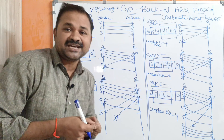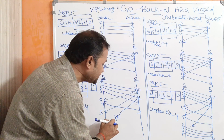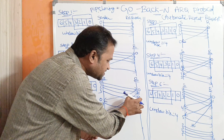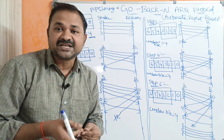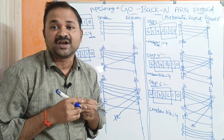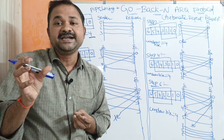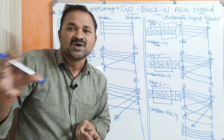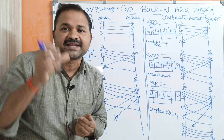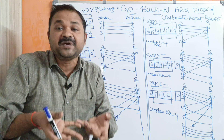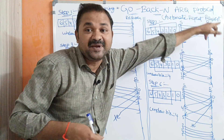Now in step five, let us assume the receiver receives frame number two and sends an acknowledgement, but that acknowledgement is lost. Every frame has a timer. The sender waits for the acknowledgement from the receiver only for a specific time period — let's say 10 milliseconds. If that time period expires, the sender will retransmit.